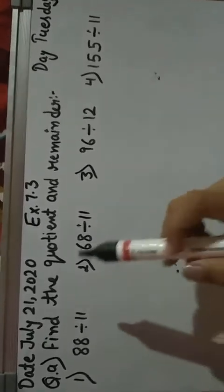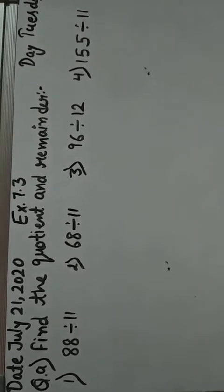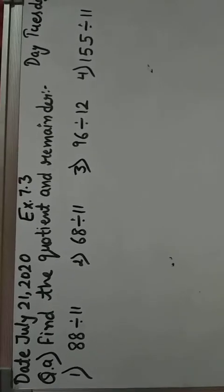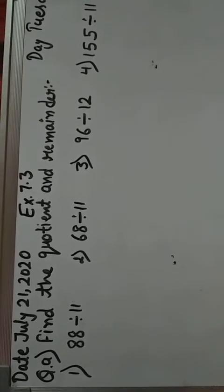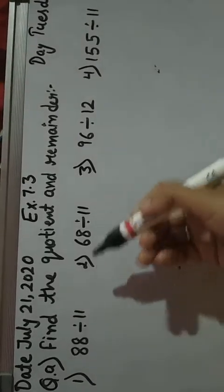So let's start the question. Find the quotient and the remainder. In previous exercise we have also found quotient and remainder, but that number is divisible by one number. But here is 2-digit number divisible by 2-digit number.